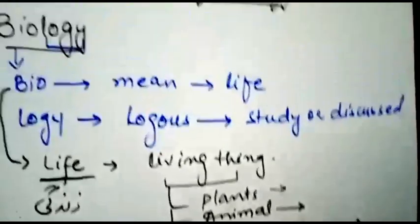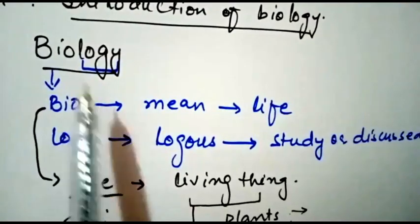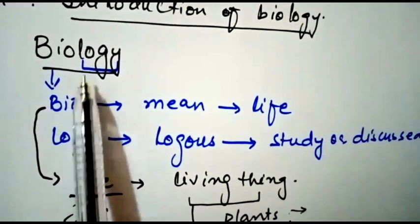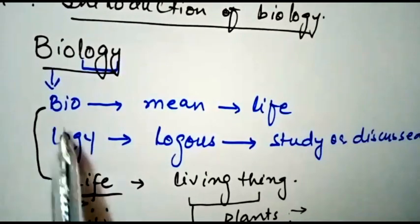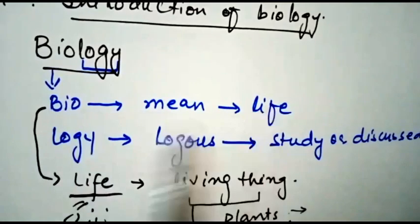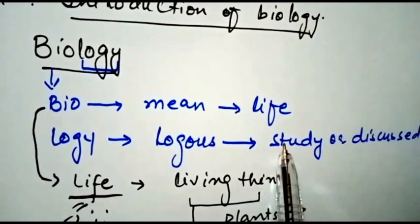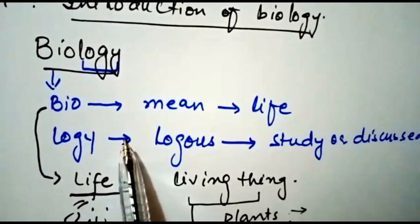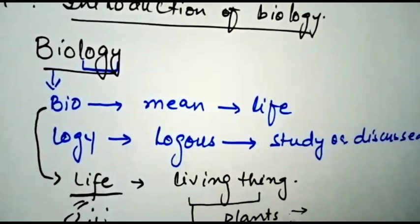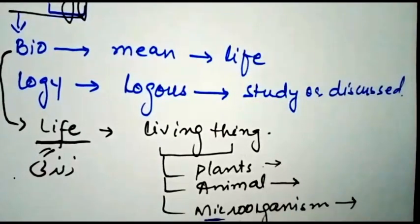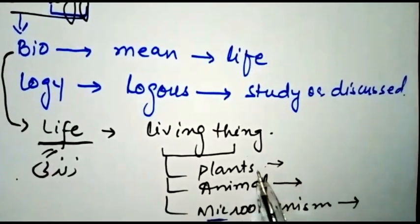The word we discussed was biology. Biology is derived from two words: bio and logi. Bio means life, whereas logi means study or discussion. So the definition of biology is the study of life. Life depends upon three categories: plants, animals, and microorganisms.